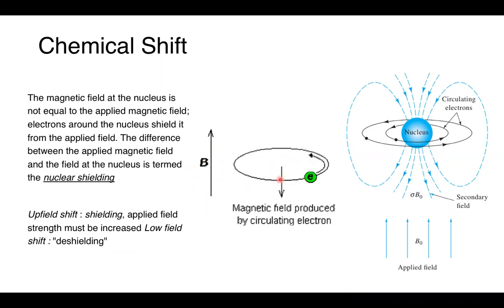An upfield shift means we have increased shielding and the applied field strength must be increased. A downfield shift means we have a deshielded nucleus, giving higher numbers of chemical shift. In all cases, the applied magnetic field must be strong enough to overcome this shielding to create a signal. Modern spectrometers are designed to produce a magnetic field fully capable of analyzing our species.